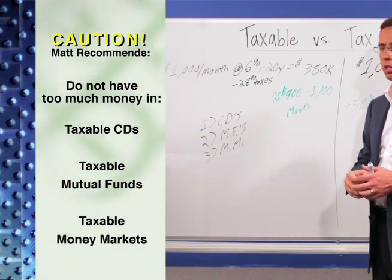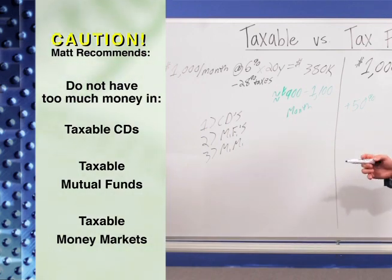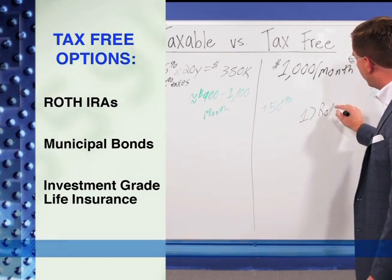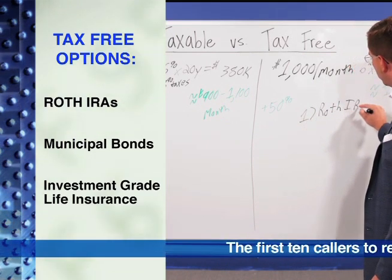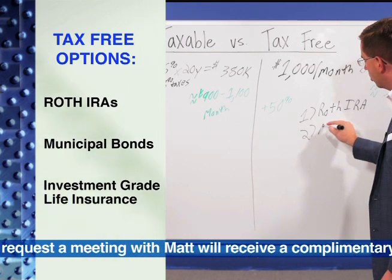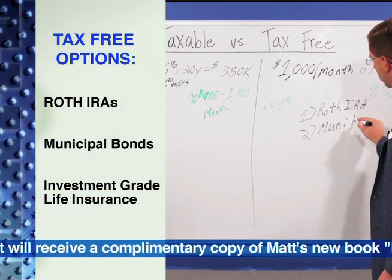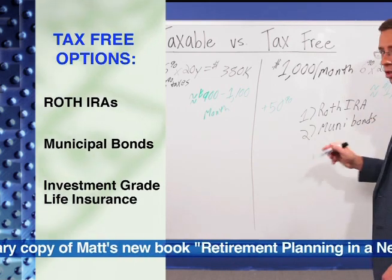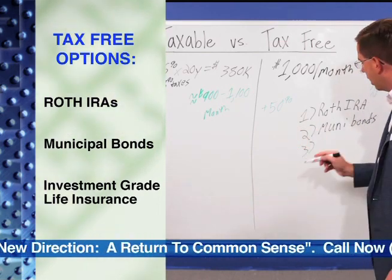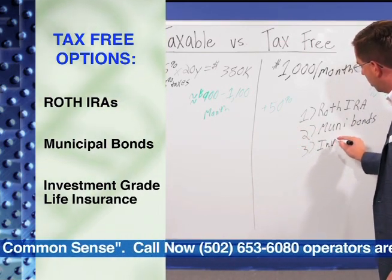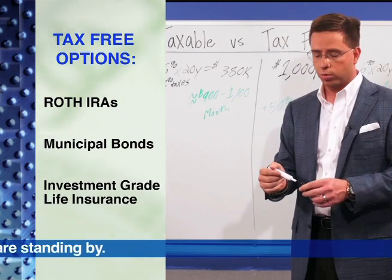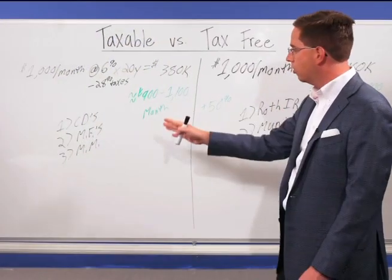If you can't do it tax-free, you can certainly do it tax-deferred. Looking at the tax-free options available: obviously you have money inside a Roth IRA — money you grow and accumulate inside the Roth is going to grow tax-free. You also have municipal bonds, or muni bonds, where the interest can be tax-free going forward. And in some cases you have what's called investment-grade life insurance — another option where you put money in, it grows tax-free, and when you take the money out it's tax-free as well.